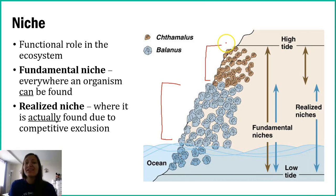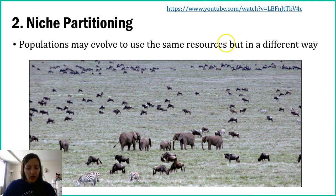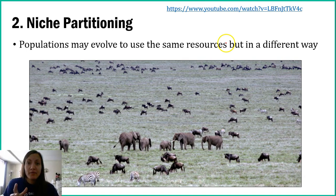The other outcome of competition is niche partitioning. Partitioning means setting up spaces or barriers — so niche partitioning is when two species share an area but use the resource differently. For example, one might eat one food type while the other eats another, or one feeds during the day while the other feeds at night, or one travels five miles while the other travels only two.